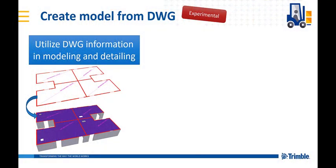DWG files are used a lot as a reference in Tekla models, but with this experimental extension you can utilize the information in the DWG and create model and details with it. Even if you need to edit the created objects after using the tool, it still improves productivity as you are getting the location and size information directly from the design intent.